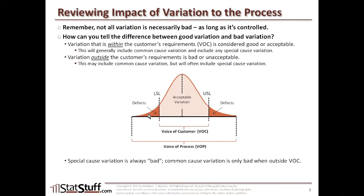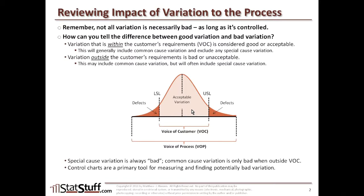Special cause variation is always going to be bad. Common cause variation is only bad when it falls outside of the voice of the customer; when it falls within that range, common cause variation is considered good or acceptable. Control charts are going to be a primary tool for measuring and finding potentially bad variation in our process.